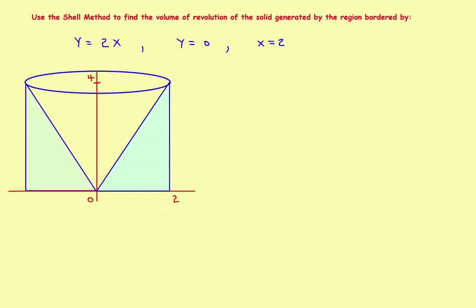The volume is 2π times the integral of the radius times the height times the thickness of an individual shell. The key to these problems is you have to actually draw the shell to get the radius and the height. You need to know what is the radius and what is the height, put in terms of x since you're going to integrate. I'll draw a couple of shells in here.